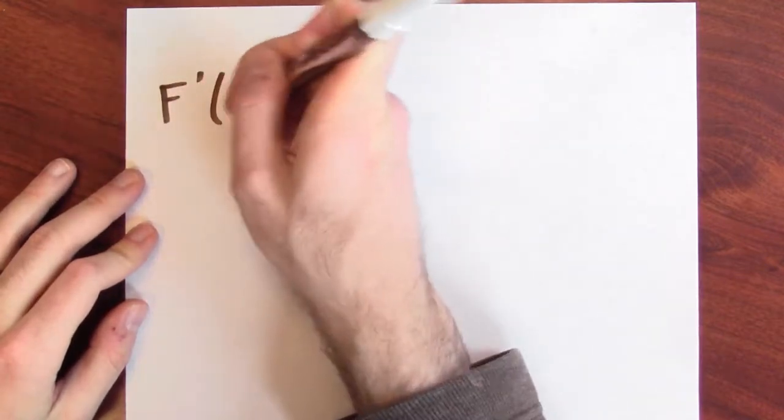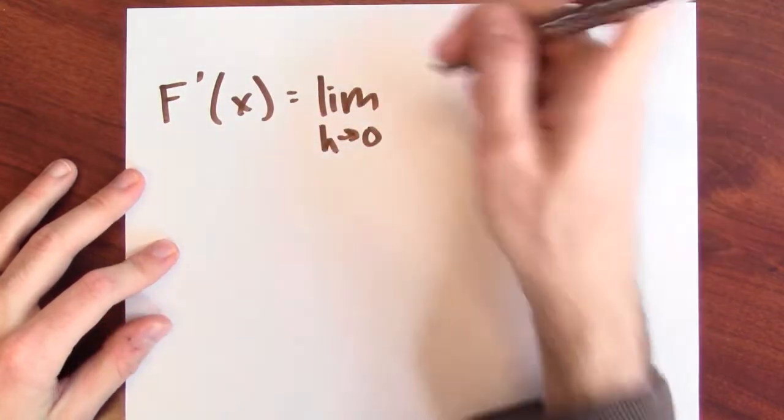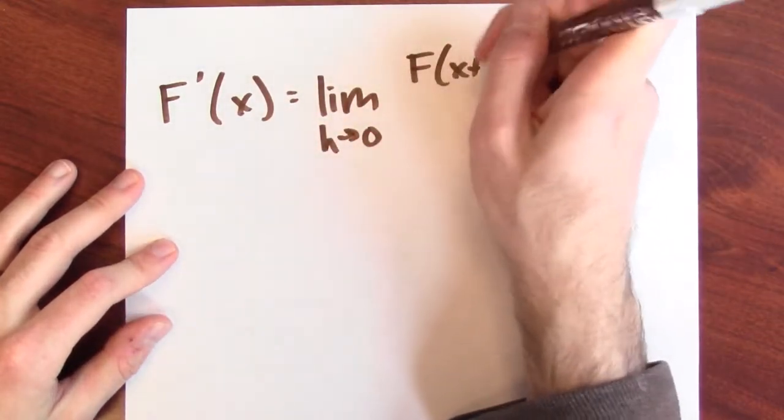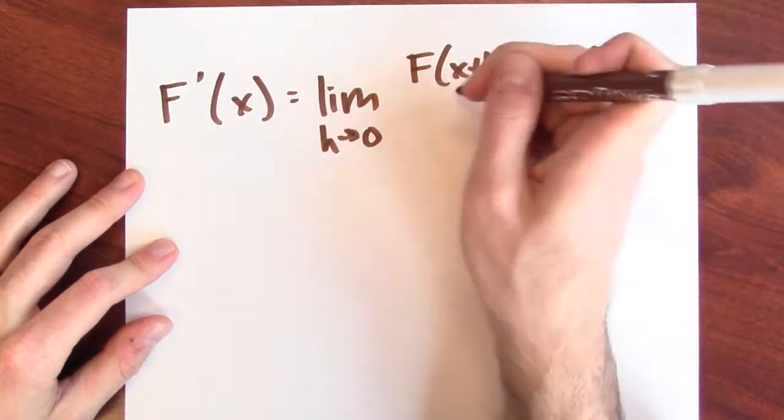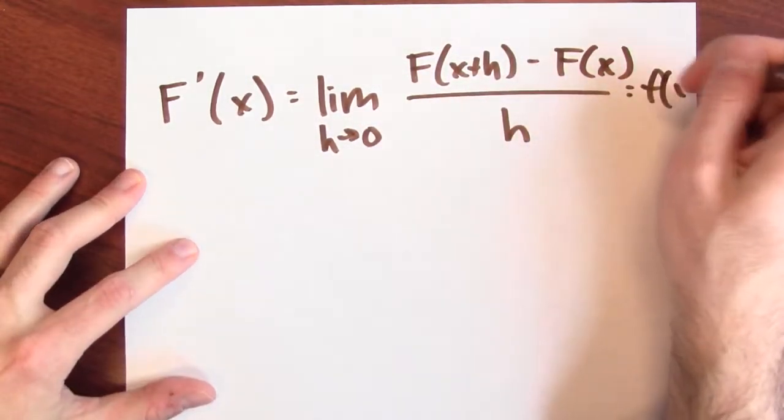The statement of the fundamental theorem of calculus is about a derivative. So we're really trying to do two different things: I'm trying to show that a limit of a difference quotient exists — that the derivative exists — and second, I'm making a claim as to the value of that derivative. Specifically, I want to show that this derivative, defined to be the limit as h approaches zero of [F(x+h) − F(x)] / h, is equal to little f of x.